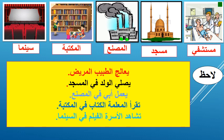Now let's label the names of these pictures. Can you see? Cinema — al-sinima. Mustashfa — hospital. Masjid — mosque. Al-masna' — the factory. Al-maktaba — the library.